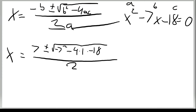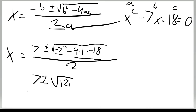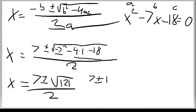Now we factor it out: negative 7 squared is 49, and 4 times 1 times negative 18 equals negative 72, so we add them: 49 plus 72 equals 121. So we have 7 plus or minus the square root of 121, over 2. Since 121 is not negative, we don't need to use i. The square root of 121 is 11, giving us 7 plus or minus 11, over 2.